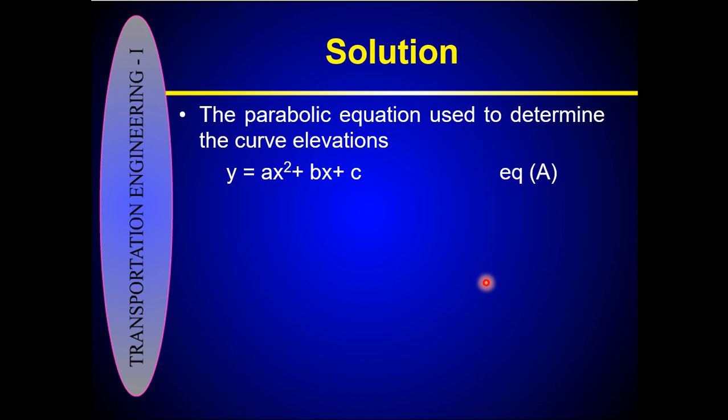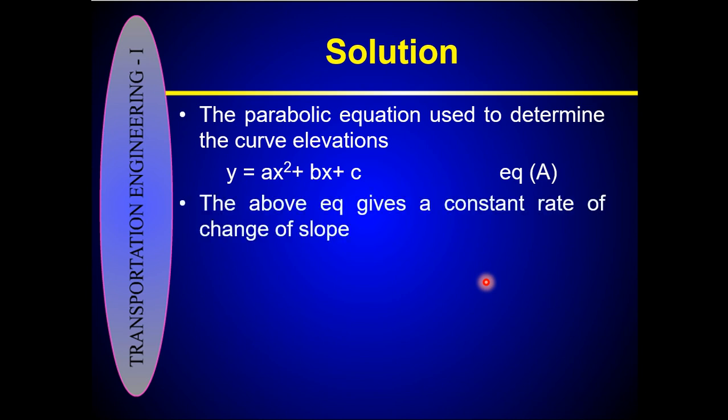You calculate all elevations at each station by putting x values from 0 to 700 feet into the equation. To calculate the slope of the curve, take the derivative of the parabolic equation: dy/dx = 2Ax + B. By substituting x values into this derivative, you can directly calculate the slope of the vertical curve at each station.